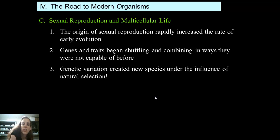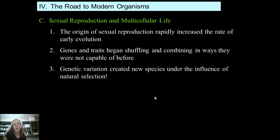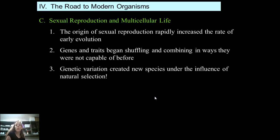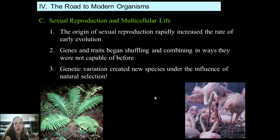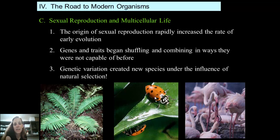Genetic variation created new species under the influence of natural selection — genes creating physical traits that help an organism be best adapted to its environment so it can survive long enough to reproduce and pass on those genes. If genes create traits that don't allow an organism to be well suited, that organism will die out before it can reproduce. We start to see flamingos, more complex forms of plants, and more complex forms of animals as well.